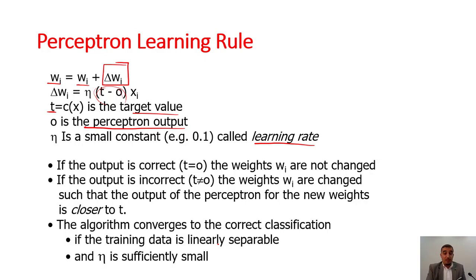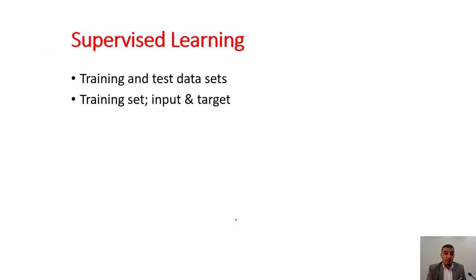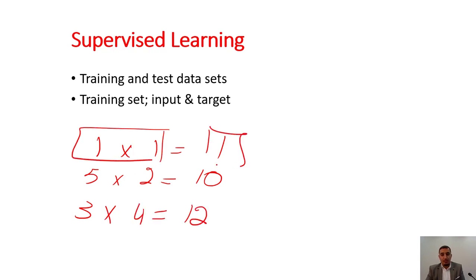Supervised learning: if I tell you 1 multiplied by 1 equals 1, 5 multiplied by 2 equals 10, and 3 multiplied by 4 equals 12 - if I'm giving you the problem and the answer, this is supervised learning. The training set contains the inputs and the targets, and the test set also contains the input and the target.